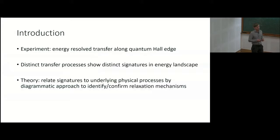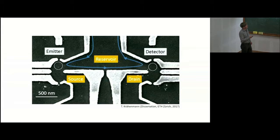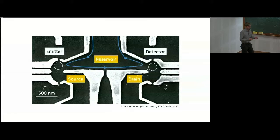Here is a somewhat more basic version of the sample just shown by Thomas. There is a source lead, which is biased and introduces electrons through the emitter quantum dot into the reservoir region. Because of the strong perpendicular magnetic field, the electrons propagate along the edge before ending up at the detector, which is again a resonant level formed by a quantum dot, before the current is measured at the drain.